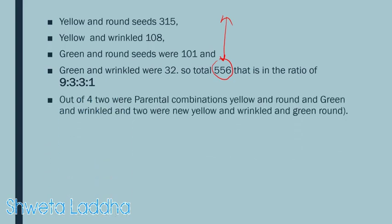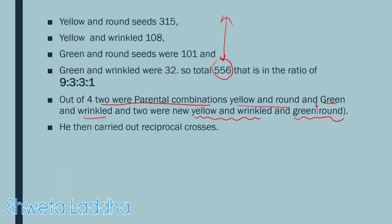Out of the four combinations, two were the parental combinations — that is yellow and round, and green and wrinkled — but two combinations were new: yellow and wrinkled, and green and round. These two were new combinations obtained. He then carried out reciprocal crosses.